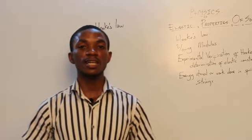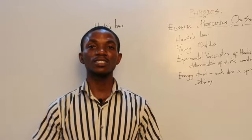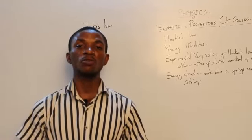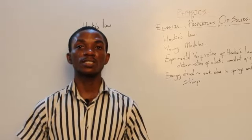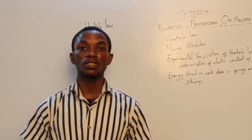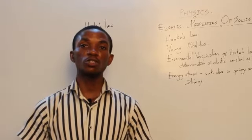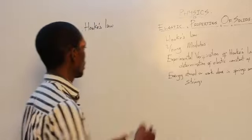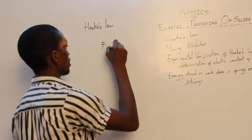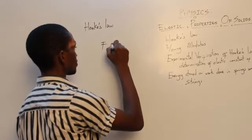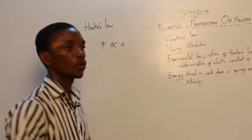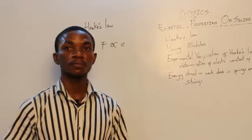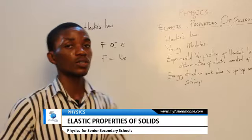Several people have taken their time to study this phenomenon of things being stretched and returning back to their original positions. One of those people came up with a law which became known as Hooke's Law. Hooke's Law states that the force applied to a body, a string, or a spring is directly proportional to the extension of the spring — that is, F is directly proportional to E, where F is the force and E is the extension. The expression becomes F equals KE.